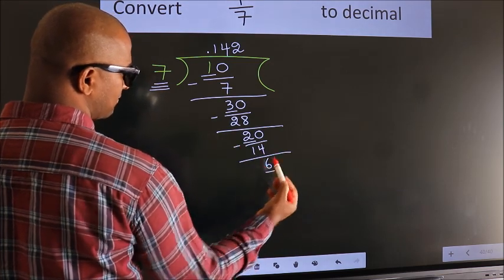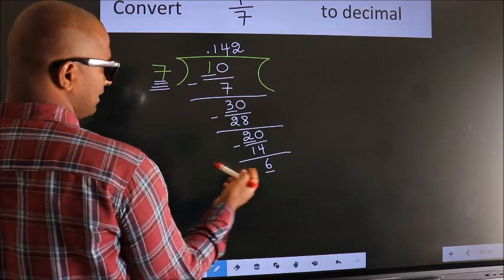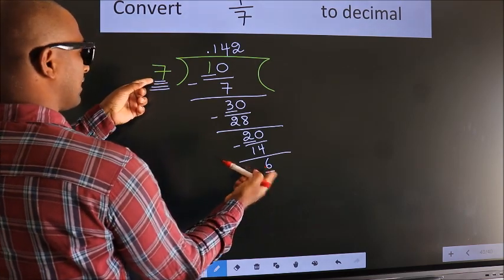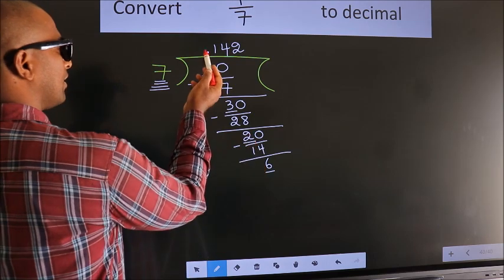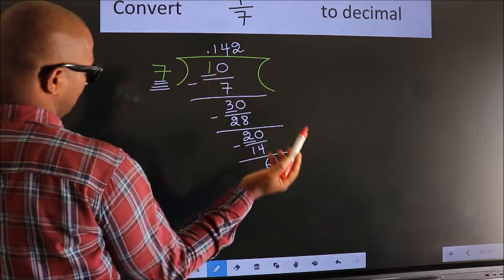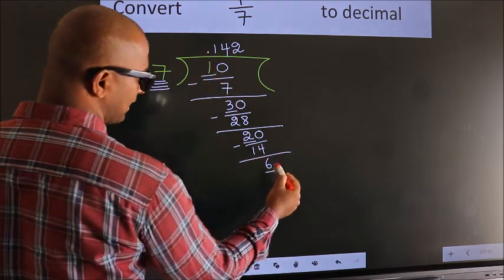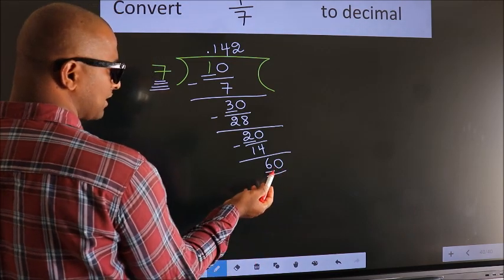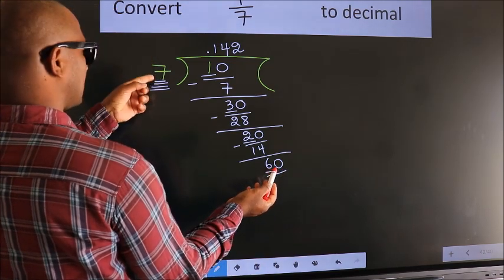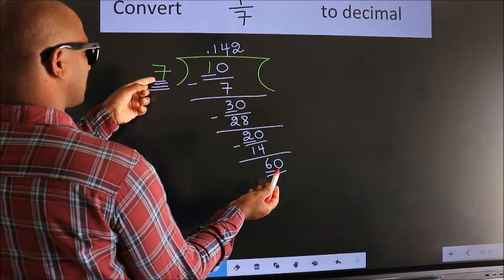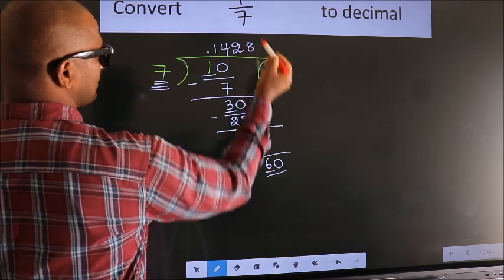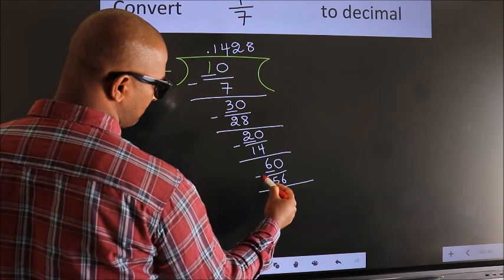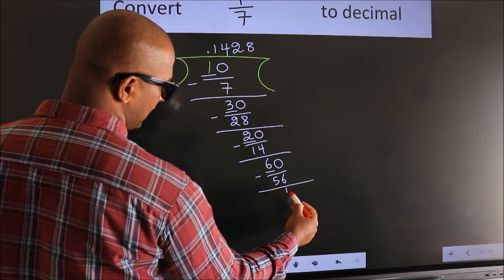Here we have 6, here 7. 6 is smaller than 7. And we already have the decimal, so we can directly take 0. So, 60. A number close to 60 in the 7 table is 7 eights, 56. Now, we subtract. We get 4.